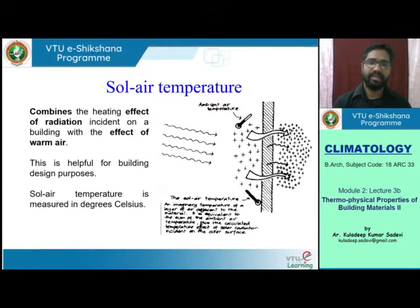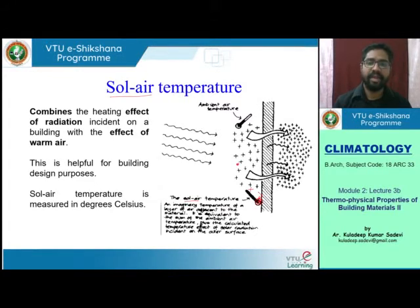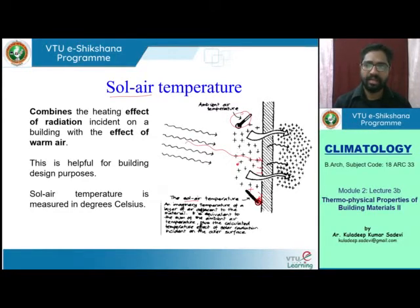The first concept is solar air temperature. Solar air temperature is not just the ambient air temperature. If you take a temperature reading of the air outside the wall you get a certain reading, but the temperature of the air adjacent to that outdoor wall will have the impact of the ambient air temperature plus the impact of the radiation that adds to the temperature of this air. So solar air temperature is an imaginary temperature of a layer of air adjacent to the surface — it is the sum of the ambient air temperature plus the calculated temperature effect of solar radiation.